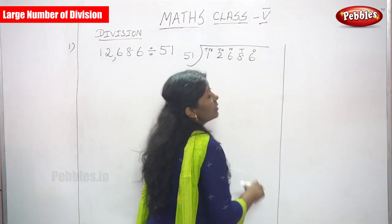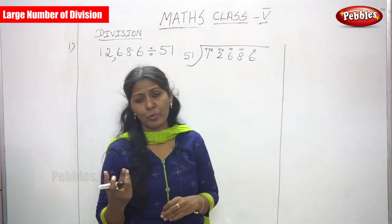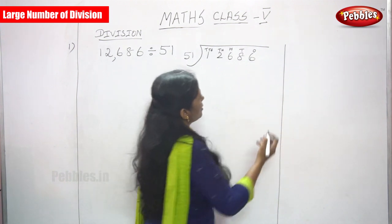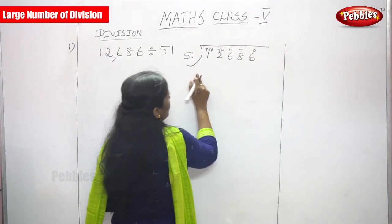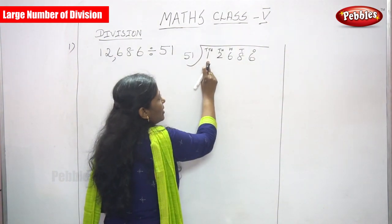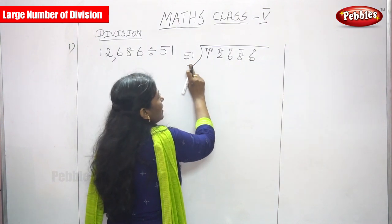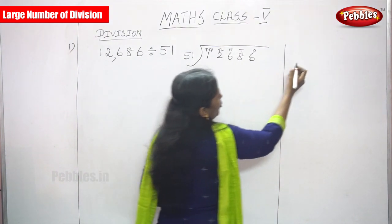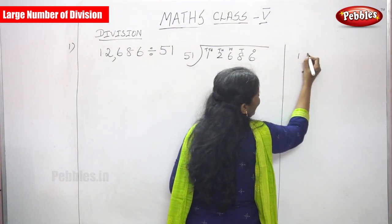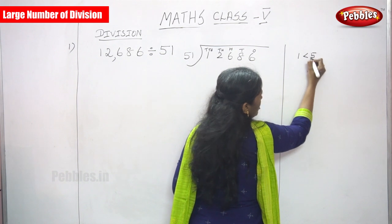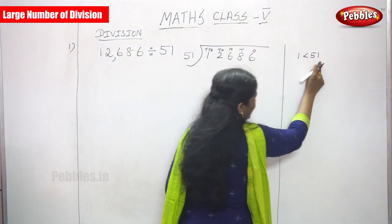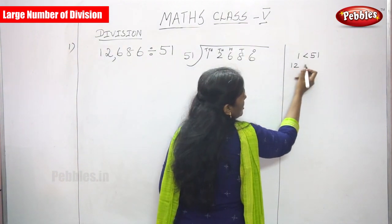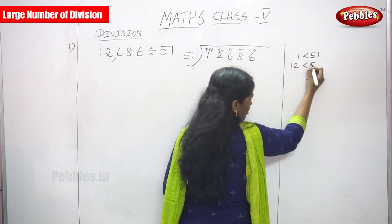You don't know the 51 times table because no one has memorized it, so you have to work it out. First, take the first digit, which is 1. 51 is a greater number and 1 is very small — 1 is less than 51, so you can't divide. Go to the next digit: that is 12. Again, 12 is less than 51, so you can't divide.